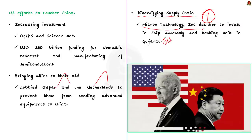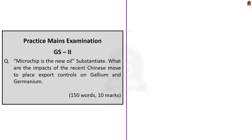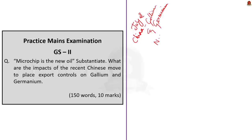These three actions of the US angered China — particularly preventing ASML from supplying advanced machinery to China. As a retaliatory measure, on July 3, the Chinese Ministry of Commerce announced export controls on items related to gallium and germanium, stating the controls were being imposed to safeguard national security interest — the same reason cited by the US and its allies. This is the backdrop of the chip war.